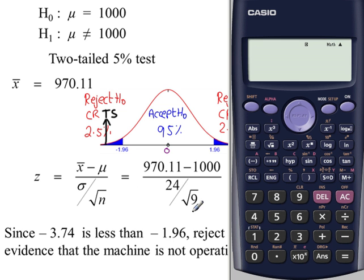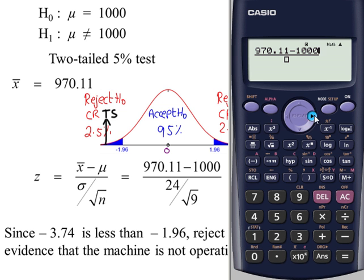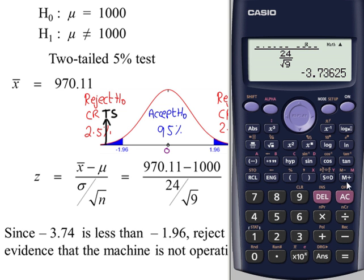For this calculation you can see there is a fraction within a fraction. On the calculator, start off by pressing the fractions key once, put in the top line, then press the fractions key a second time to get the test statistic. The wrong way to do it is to press the fractions key once, then press it again, and then put everything in — that will give you the wrong value.